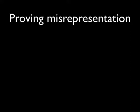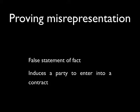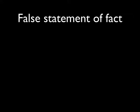Misrepresentation is the situation in which a false statement of fact induces a party to enter into a contract, and it comes in a number of different forms — fraudulent, negligent, and innocent misrepresentation in the case of an honest and diligent but incorrect speaker. To prove misrepresentation, you need to prove both elements of the offence — the false statement of fact and that the false statement induced a party to enter into a contract. Generally speaking, for a statement of fact to be subject to a claim of misrepresentation, it has to be a statement of current or past rather than future fact. It has to be a statement of fact, not prediction.